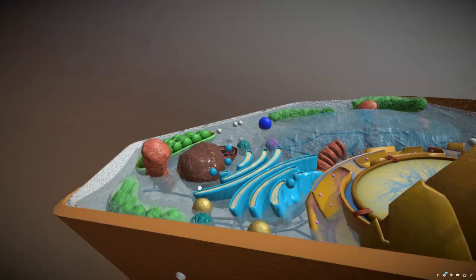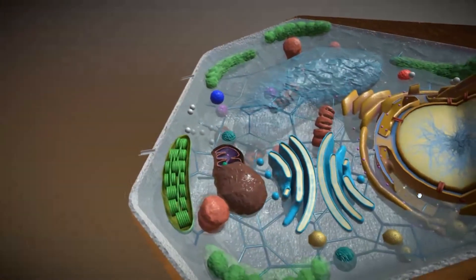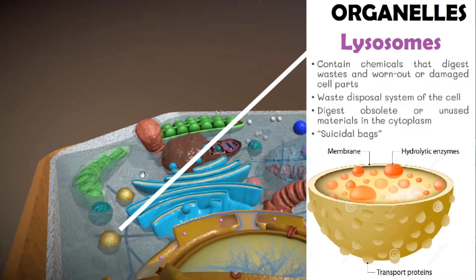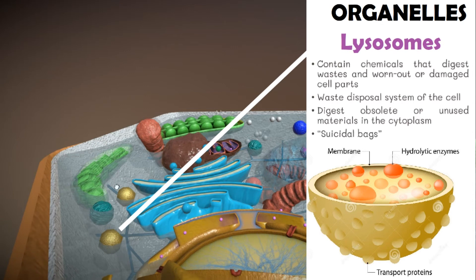Did you know that cells also produce waste? In the cytoplasm, structures called lysosomes contain chemicals that digest waste and worn-out or damaged cell parts. Lysosomes act as the waste disposal system of the cell by digesting obsolete or unused material in the cytoplasm. Thus, lysosomes are also likened to suicidal bags in the cell.